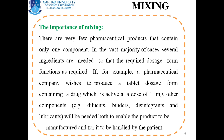Other components — for example, diluents, binders, disintegrates, and lubricants, which are excipients — will be needed both to enable the product to be manufactured and for it to be handled by the patient, because 1 mg is not enough quantity to be handled easily. It is difficult to handle because it is a minute quantity, and proper compression of the tablet is not possible with just 1 mg mass. So there are several other components necessary for enabling the manufacturing of the dosage form.